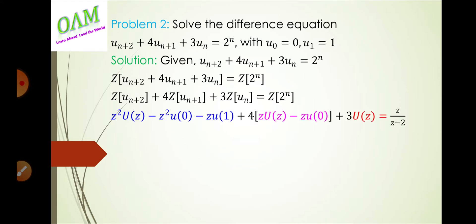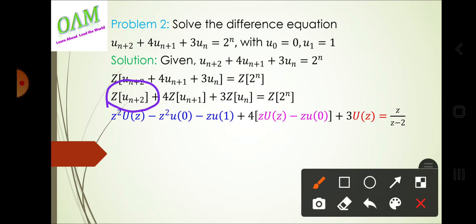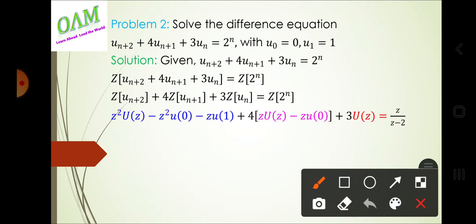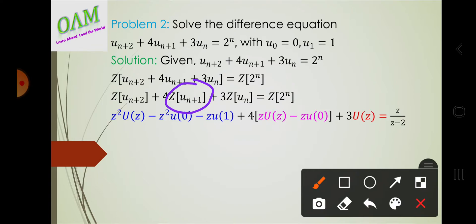In the next step, applying the time shifting property, Z{u(n+2)} becomes z²·U(z) − z²·u(0) − z·u(1). Here capital U(z) is the Z-transform of u(n). Similarly, Z{u(n+1)} becomes z·U(z) − z·u(0). For Z{2^n}, using the formula Z{a^n} = z/(z−a), we get z/(z−2).